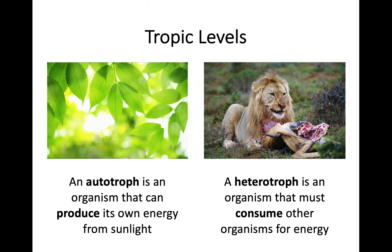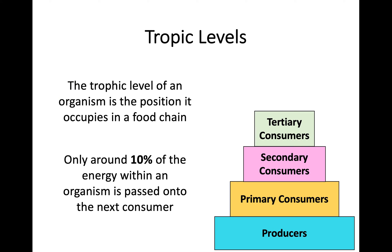An autotroph is an organism that can produce its own energy from sunlight — taking solar energy and converting it into chemical energy and sugars, which is what photosynthesis covers. If you are not an autotroph, you are a heterotroph, meaning you must consume other organisms for energy. A lion, for example, cannot photosynthesize; it must consume other organisms to obtain energy.